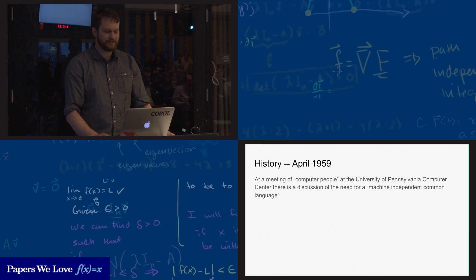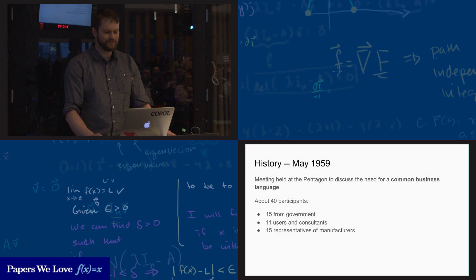In April 1959, at a meeting of computer people at the University of Pennsylvania Computer Center, there was a discussion of the need for a machine-independent common language. There was a follow-up meeting in May 1959 to further discuss this need, really for specifically a common business language. The participants included government and industry employees and consultants. There were about 40 participants. As you can see from this, most of them were from government or from manufacturers. Academia really wasn't very well represented in this meeting.